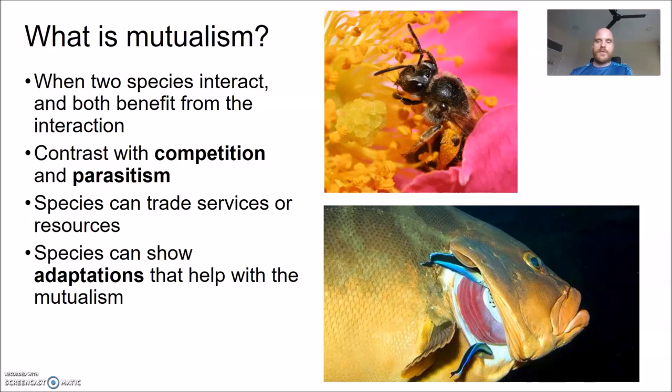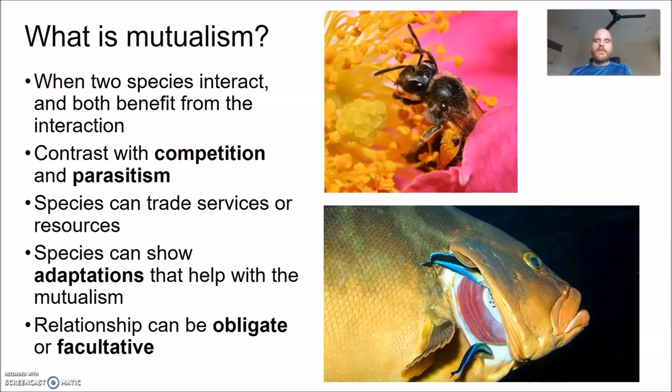A pollinating insect inside a flower is providing the service of pollination — carrying pollen to another flower, which benefits the plant. In exchange, the plant provides nectar and pollen as resources. Another example: cleaner wrasse go inside the gill and mouth cavities of larger fish, removing parasites and dirt. They provide a service and receive food as a resource in return.